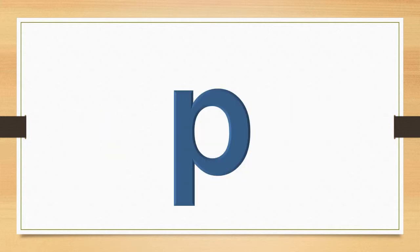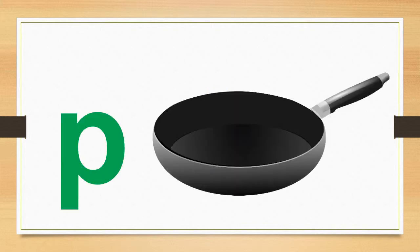What sound does the letter P make? The letter P says P. P says P. The word pan starts with the sound P. P, pan, P. Say it with me. P, pan, P.